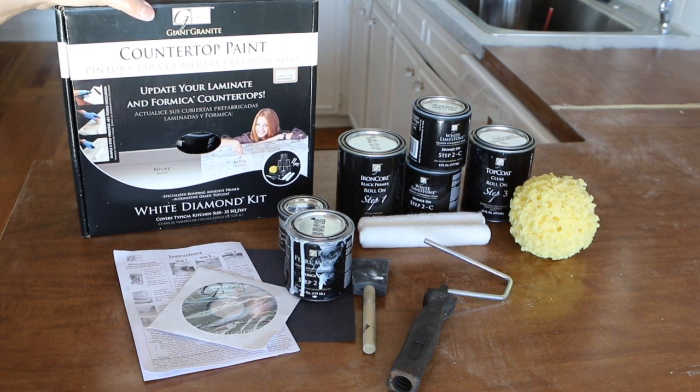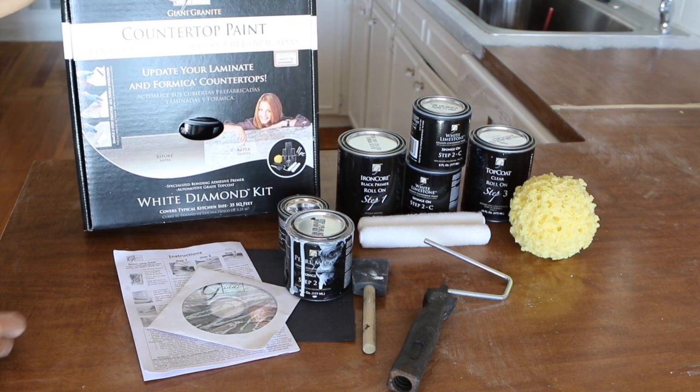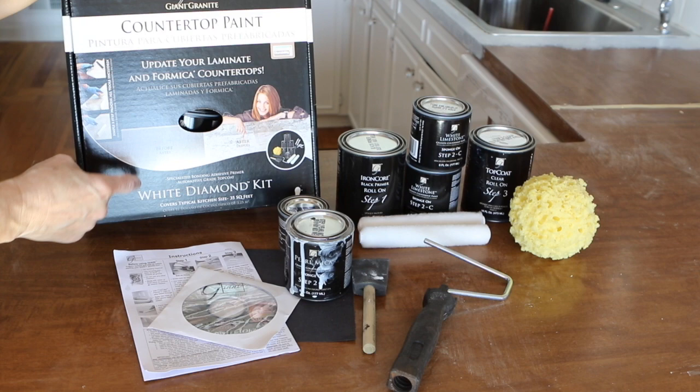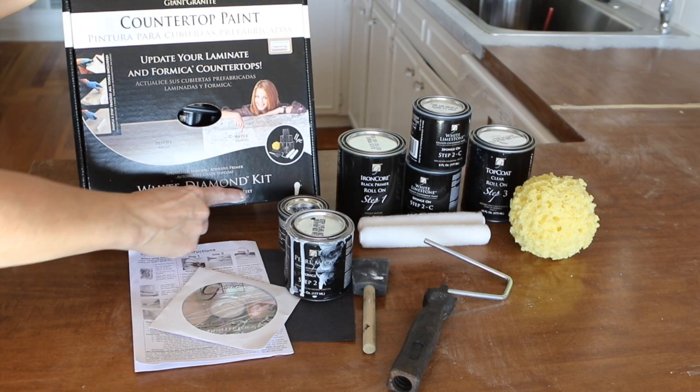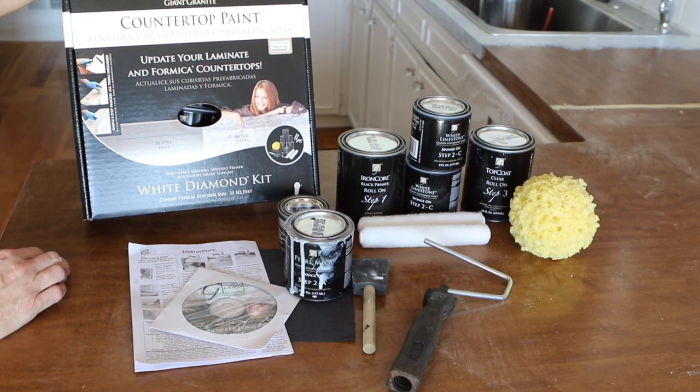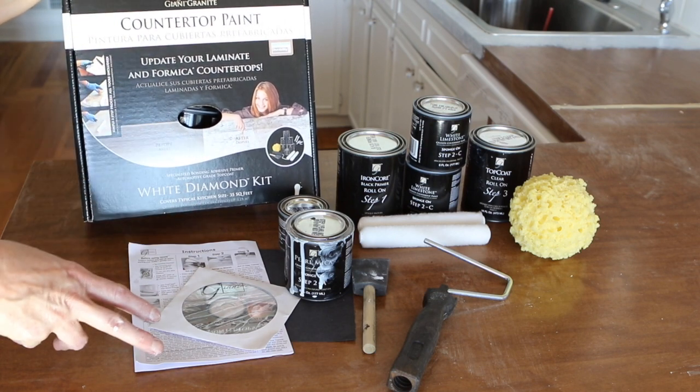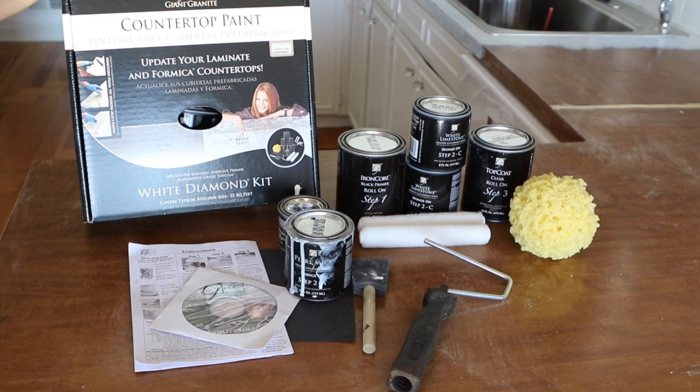Okay, I'm going to show you how I painted my Formica countertop with Gianni countertop paint. The paint kit costs about $90 or so, and I got the white diamond kit. It comes in many different colors of granite. This is for granite, but I made it look like marble the way that I did it, and I'm going to show you the steps I used.